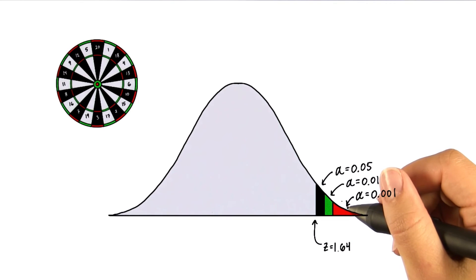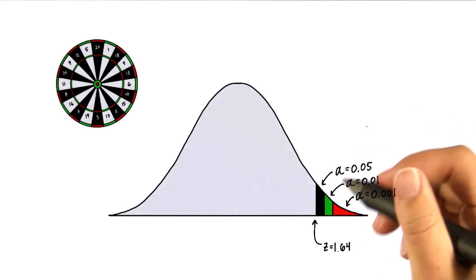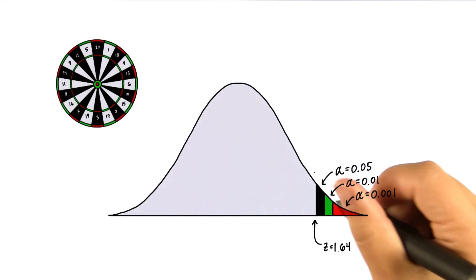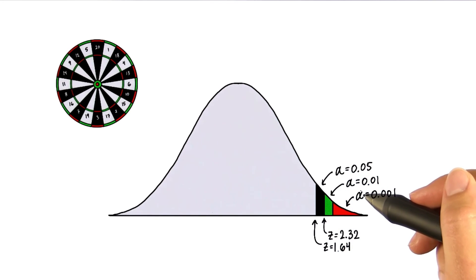It's even more unlikely to occur by chance if the mean lands beyond z equals 2.32. The probability there is 0.01.